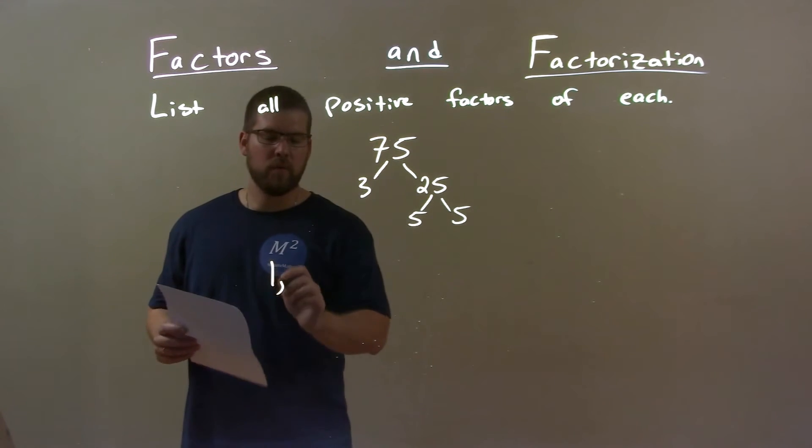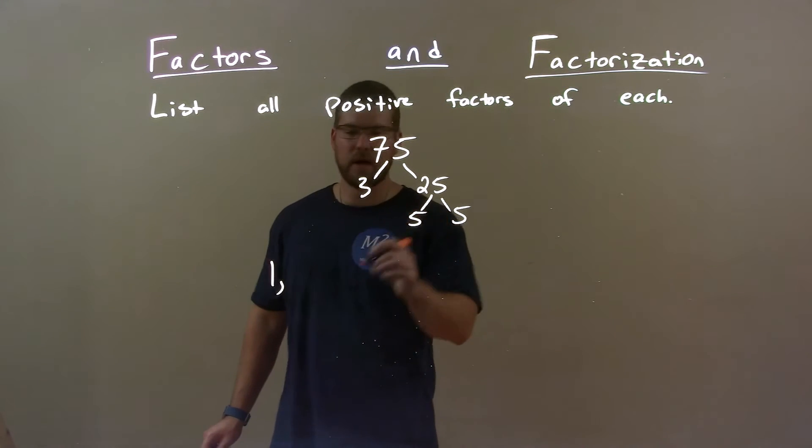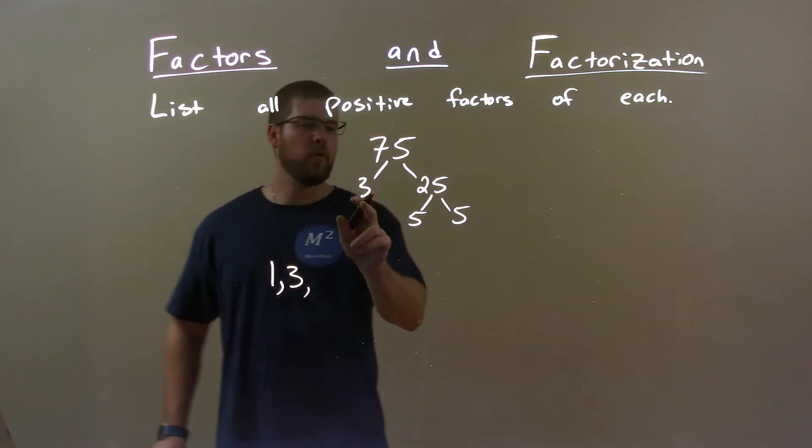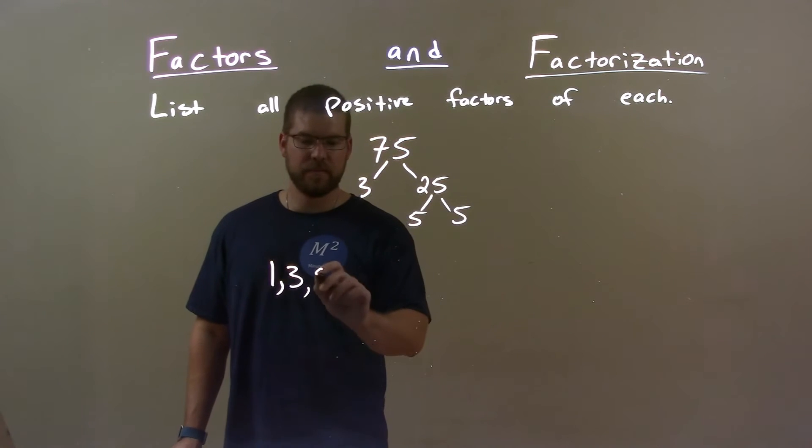So let's make our list. 1 will always be on our list. Smallest prime number is a 3. 4, nothing we can multiply together to get 4, but 5 is here.